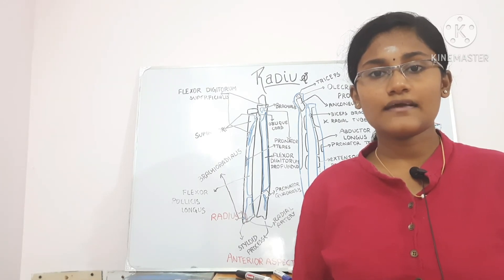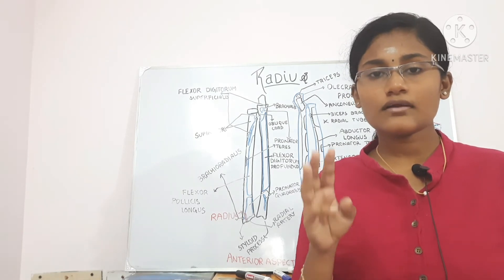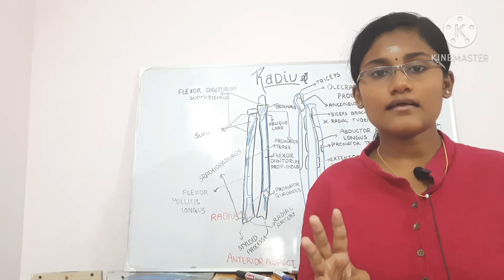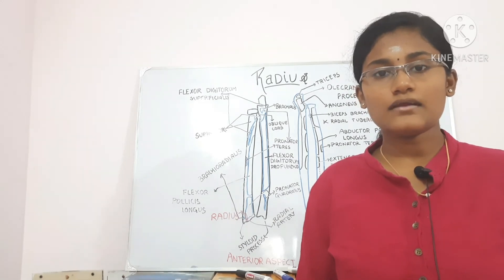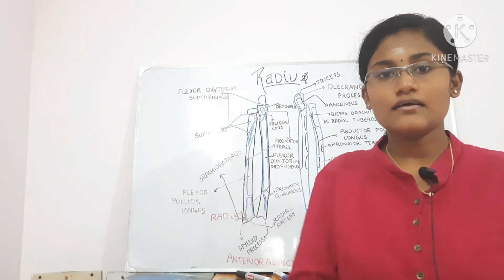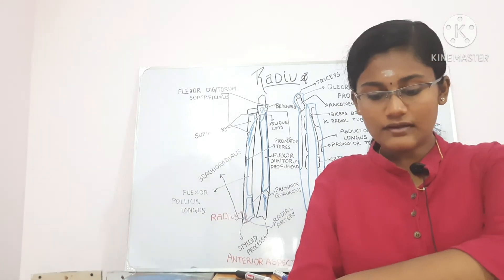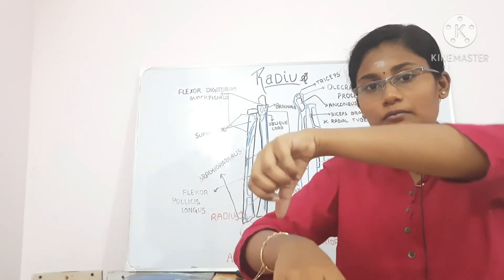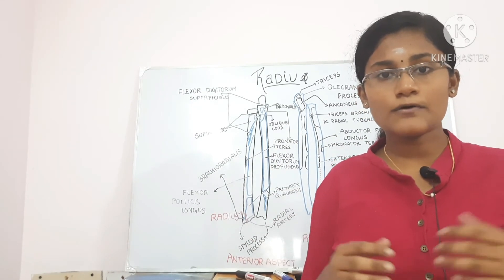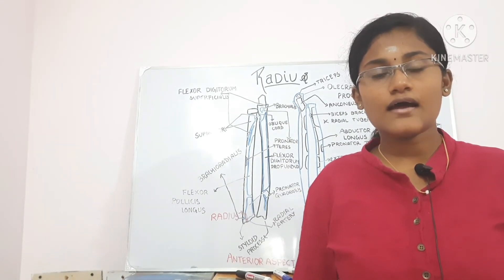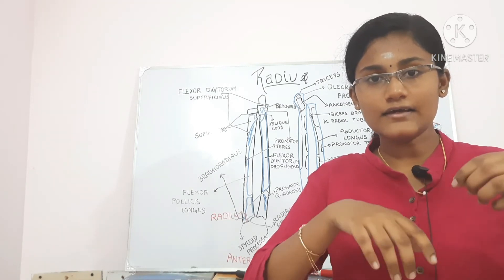In the clinical anatomy of the lower end: Colles' fracture occurs when we fall with an outstretched hand — the distal fragment is displaced backwards and upwards. Smith's fracture is the opposite, where the distal fragment is displaced anteriorly.